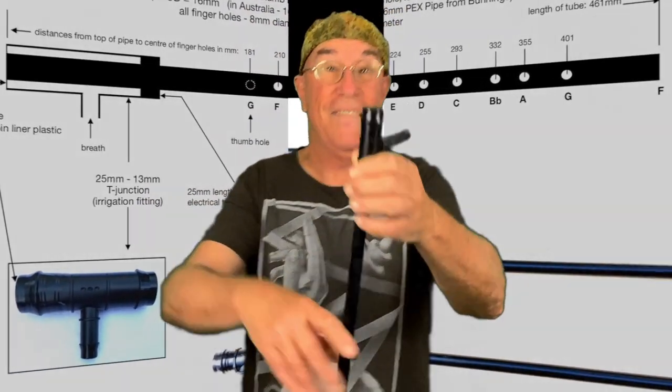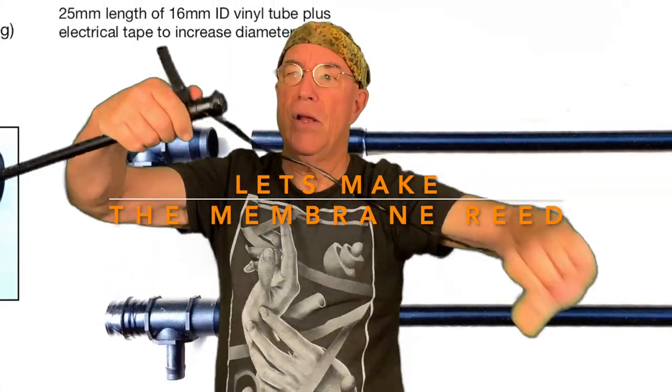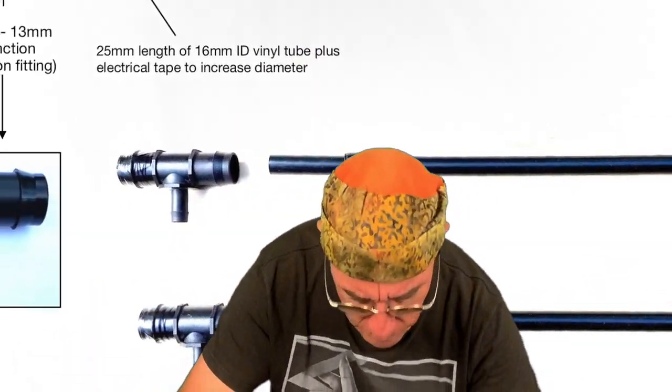A longer chanter. This is using poly pipe again. In Australia it's called PEX pipe. So let's take that membrane reed off and have a look at how you actually make one.